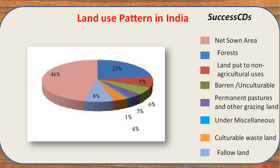Let's have a quick glance at land use patterns in India. As India is an agro-based economy, it has a large net sown area of 46 percent. Forests cover 23 percent, 9 percent is land put to non-agricultural uses, 6 percent is barren or unculturable land, 3 percent is permanent pastures and grazing land, 1 percent is miscellaneous, 4 percent is culturable wasteland, and 8 percent is fallow land. Culturable wasteland is land on which crops can be grown but is currently not in use.